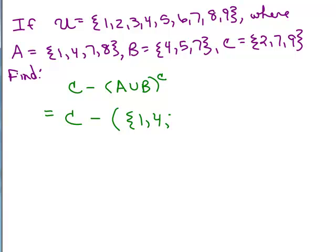So I get all of A, one, four, seven, and eight, and all of B, which is four, five, and seven. Well, I've got a four already, five I don't have yet, and I have a seven already.